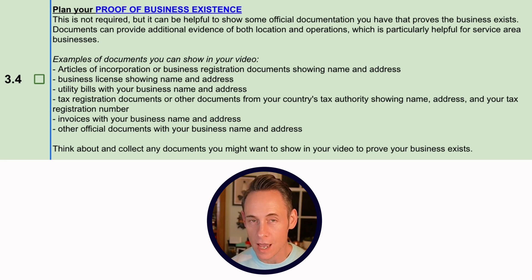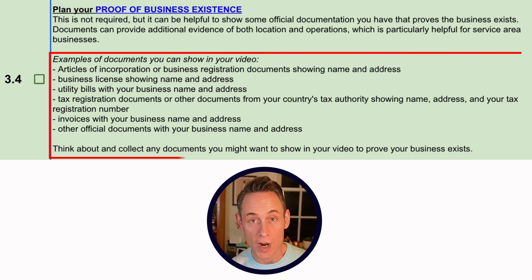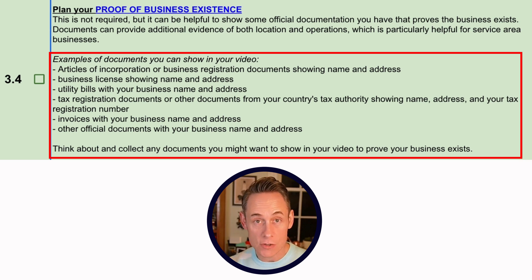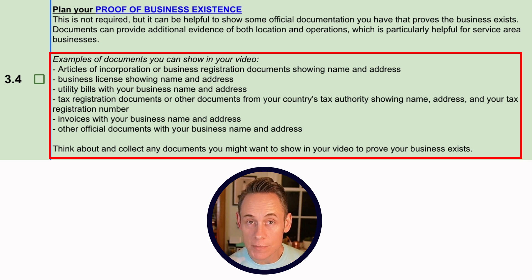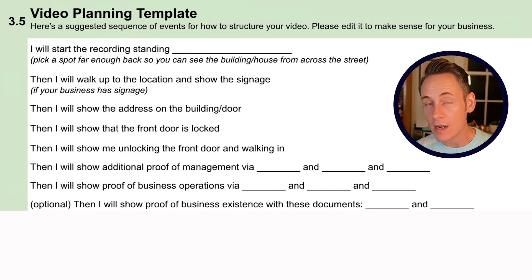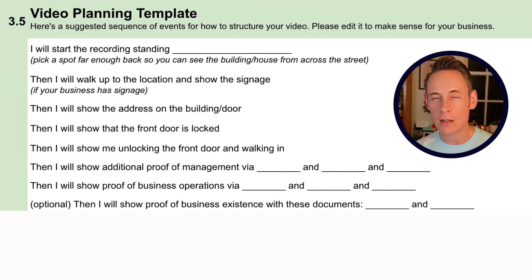Finally, proof of business existence — not strictly required, but the more evidence the better. This includes your business license and registration, a utility bill with your business name and address, and tax documents from your country's tax authority with your name and address. The information on these should match your name, address, and phone number on your Google Business Profile. I also have a little template in section 3 you can fill in to create a script to follow when recording your video.